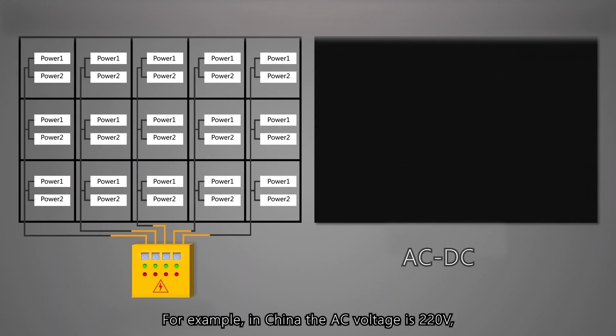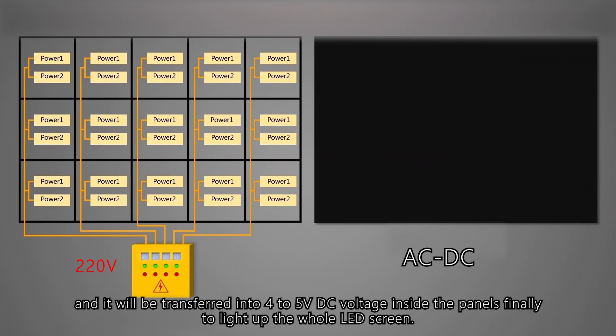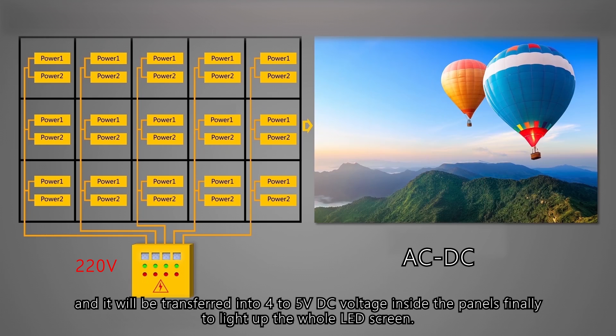For example, in China, the AC voltage is 220V, and it will be transferred into 4 to 5V DC voltage inside the panels, finally to light up the whole LED screen.